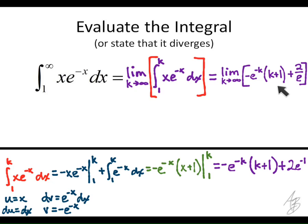So we don't need these brackets here because that 2 over e is a constant. So really it's just this term that we need to allow k to approach infinity. So we rewrite it.